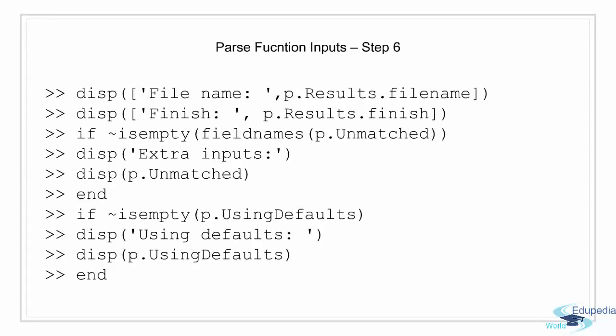Now comes step 6, where we actually use the inputs that we have parsed. The input parser has three properties. First is Results — a structure array with the names and values of all inputs in the scheme. Second is Unmatched — a structure array with parameter names and values parsed to the function but not in the scheme; this is used when keepUnmatched is set to true. Third is UsingDefaults — a cell array with the names of optional inputs assigned default values because they were not parsed. In this slide, we use the value of file name and finish, check whether Unmatched is empty, and also check for defaults if no values for optional parameters were parsed.